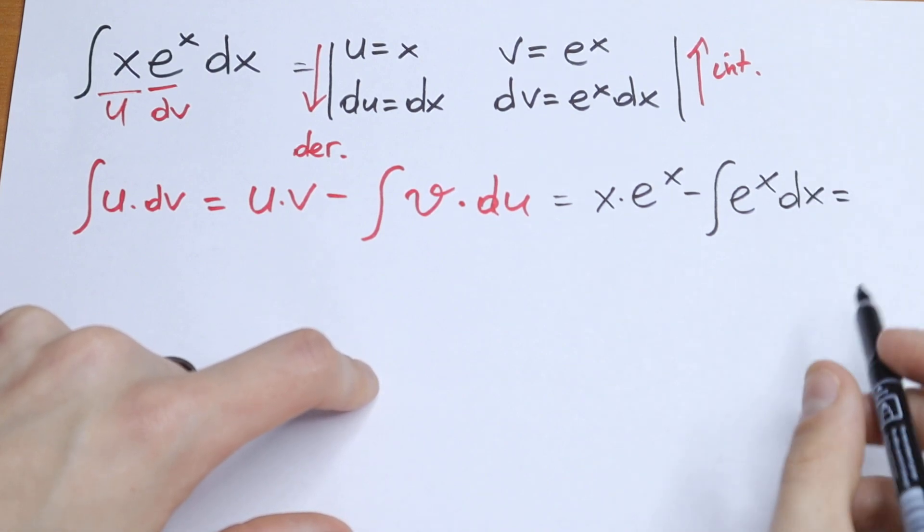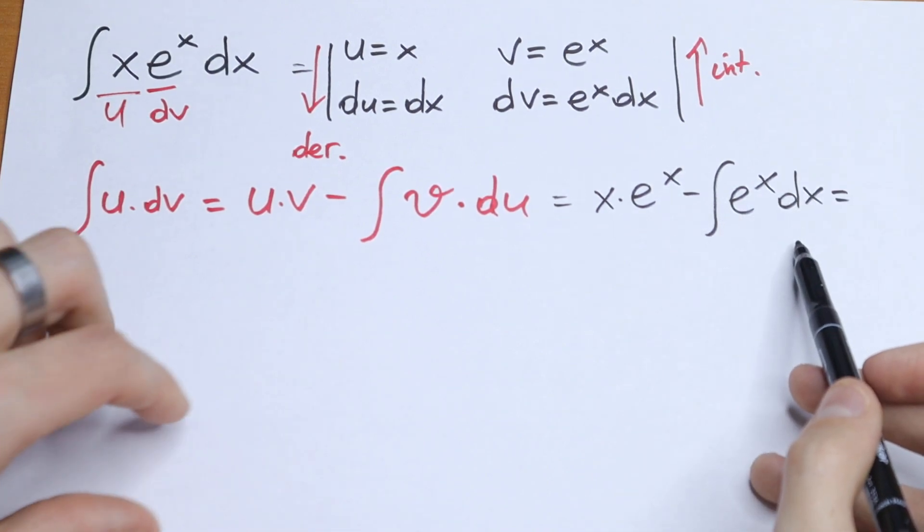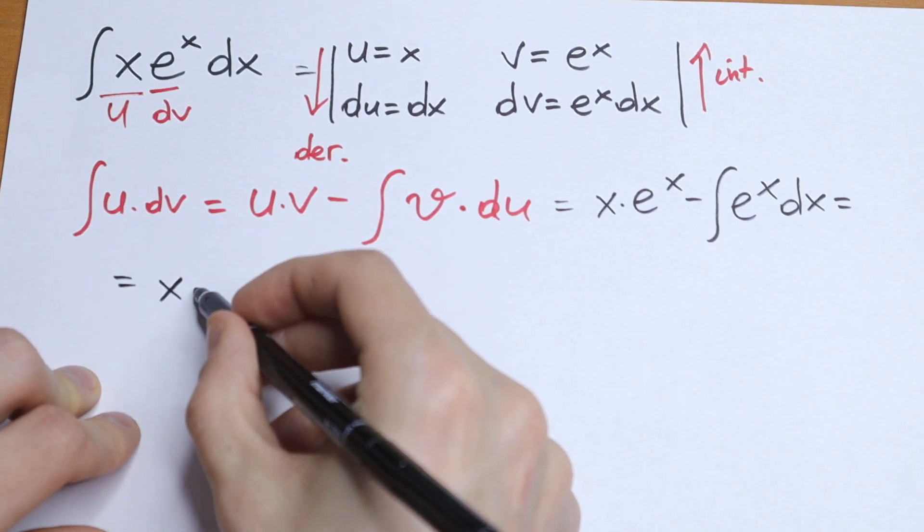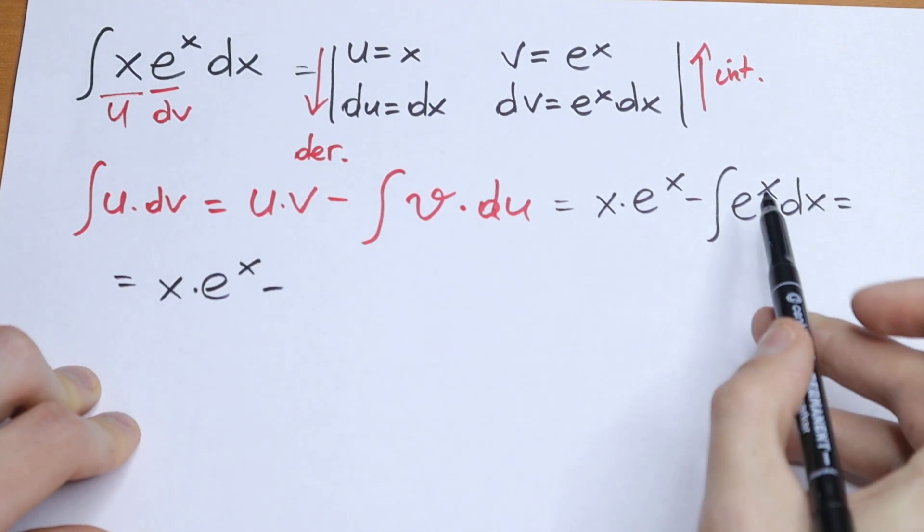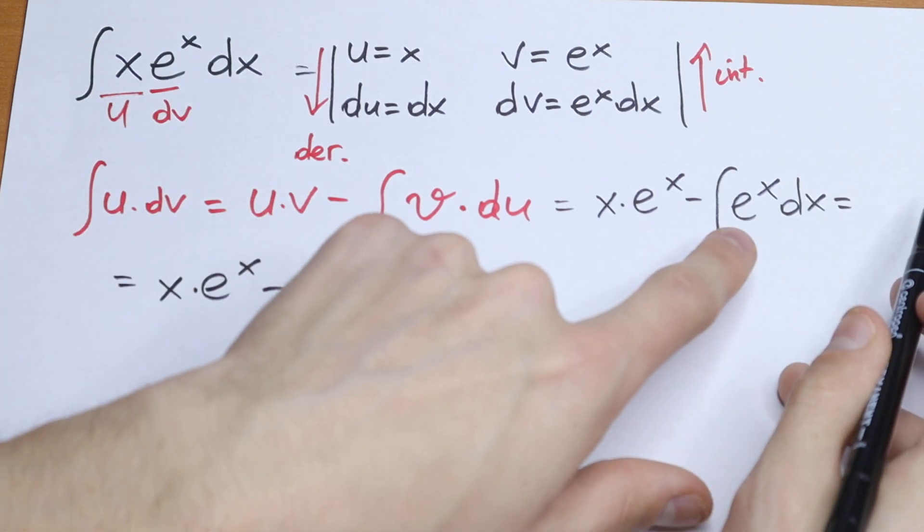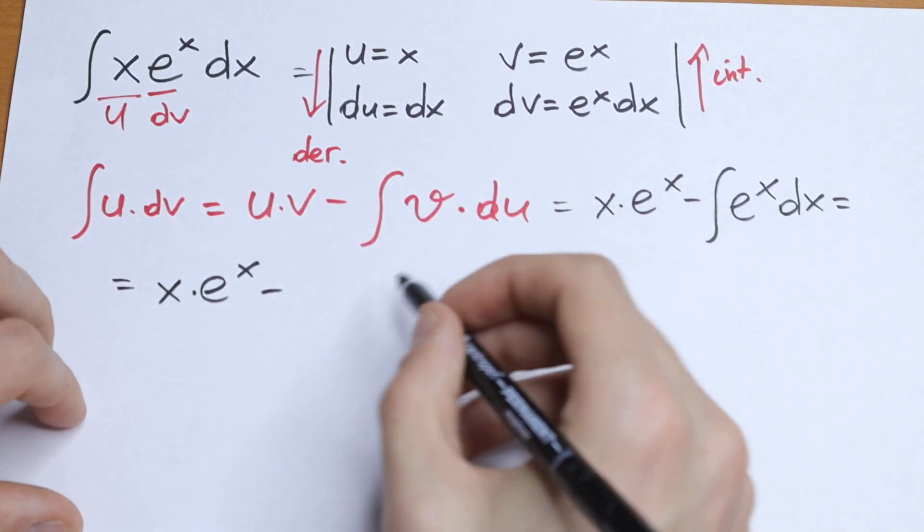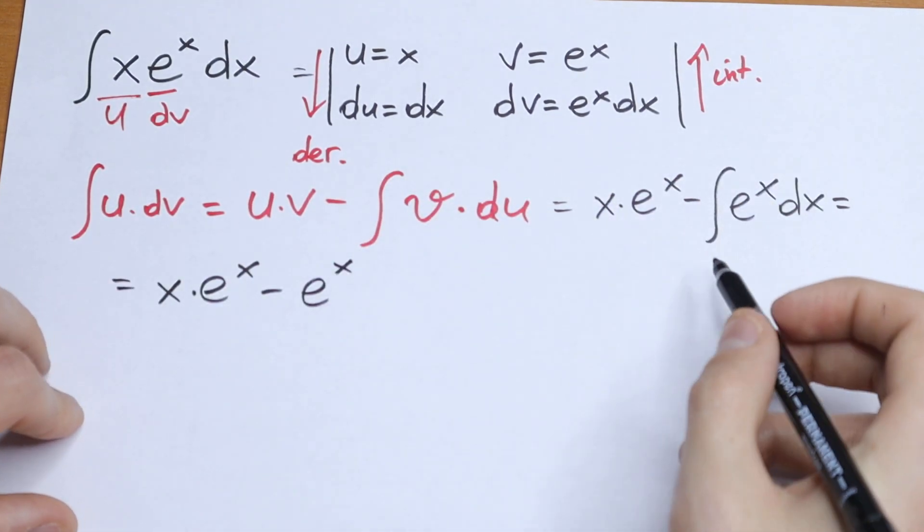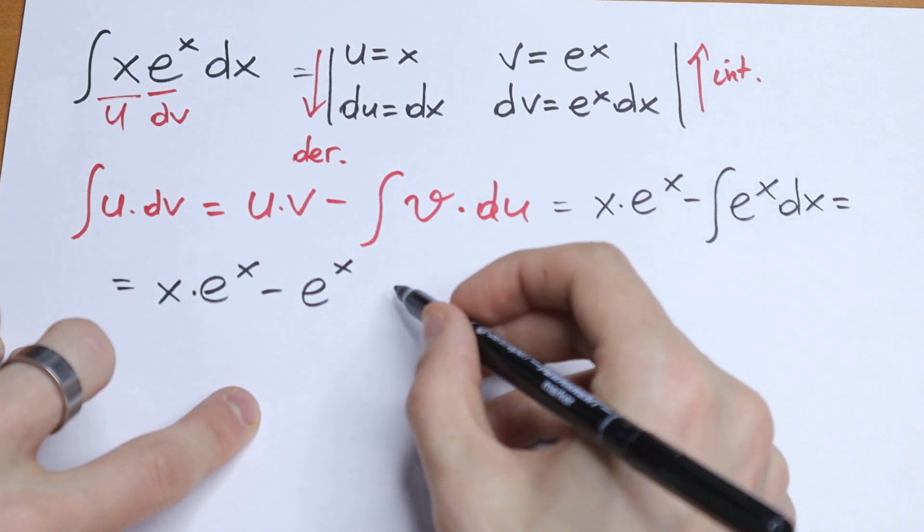So the last step, we need to find this integral. This is a classic, this is a table integral. So we will have x times e to the power x minus the integral of e to the power x, which is e to the power x. And of course, in the end, plus C.